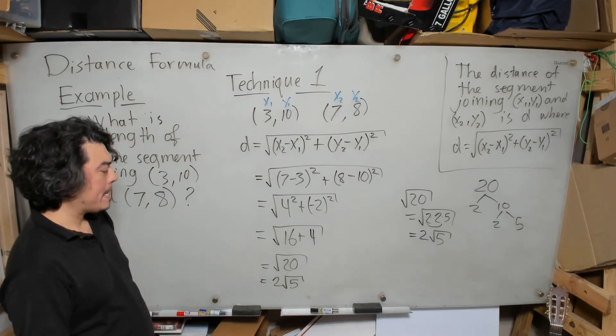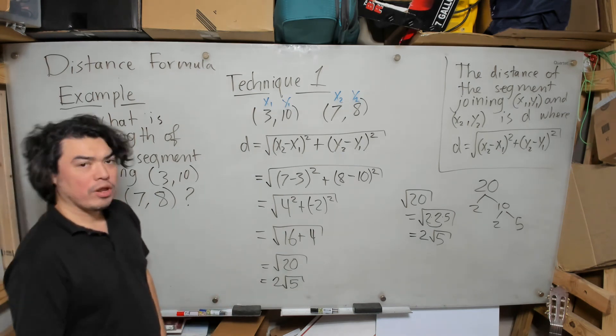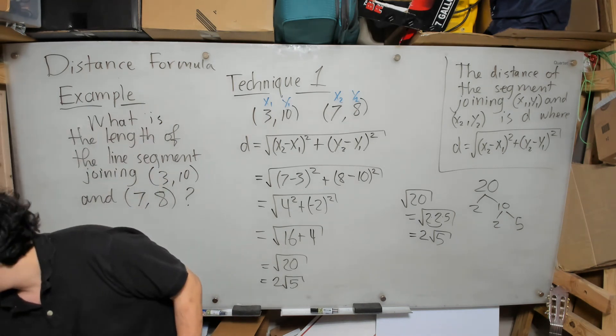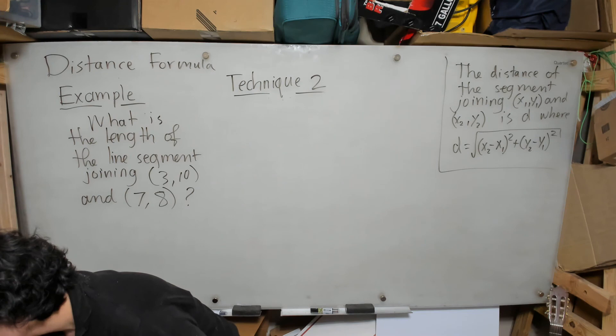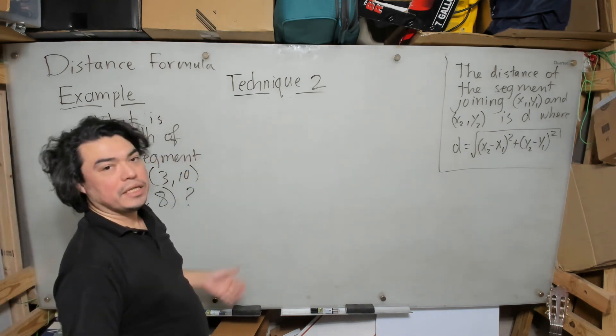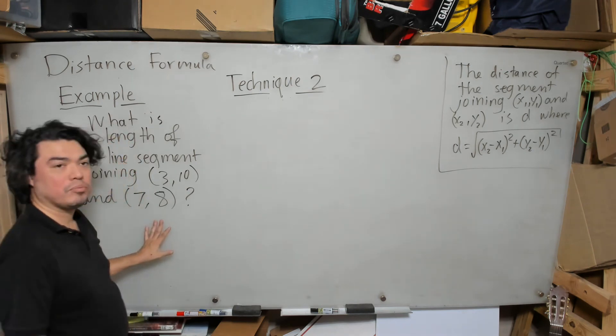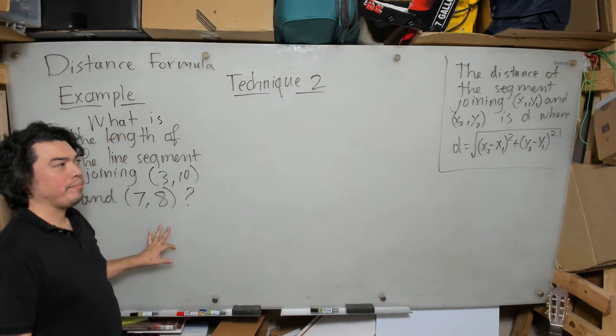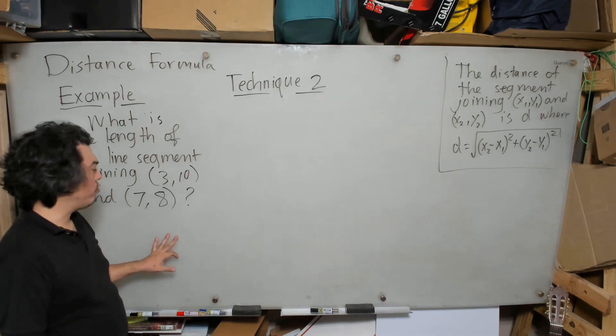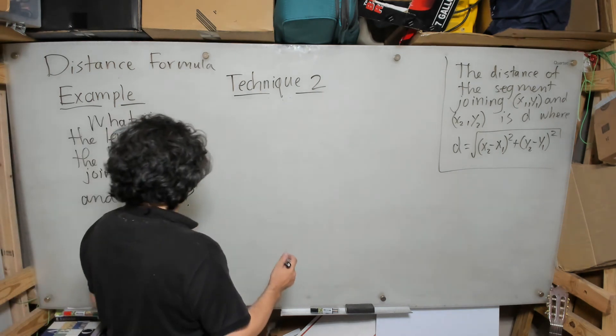So finally, I can see that the distance of the segment joining these two points is the number 2√5. I hope you all have enjoyed this technique, and now we're going to go on to technique 2.